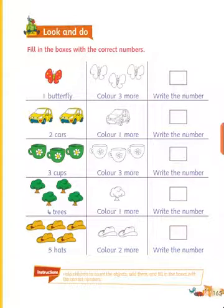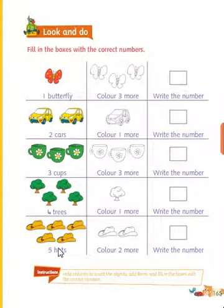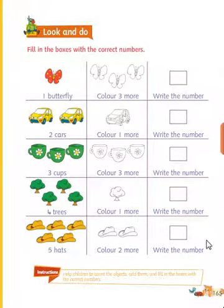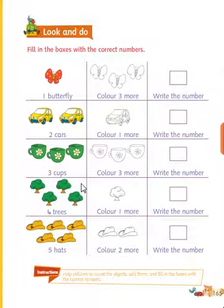Here you see four trees, we add one more, so how much will be here? Five. Okay, the answer is five. Here you see five hats and we add two more, so how much will be? Seven. I hope you all understood what is the meaning of one more. Allah please take care — good luck!